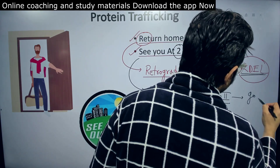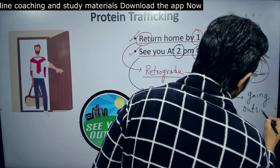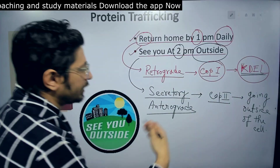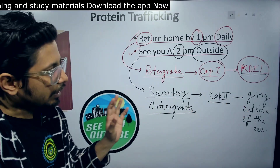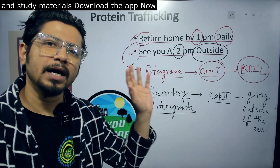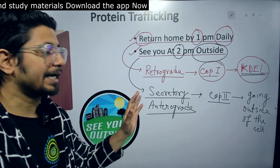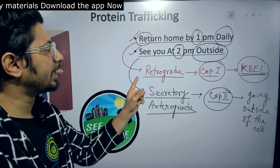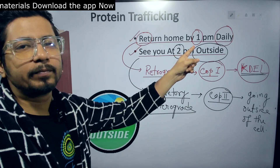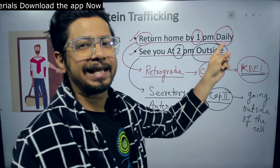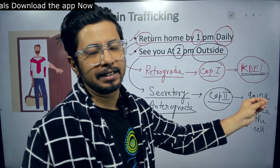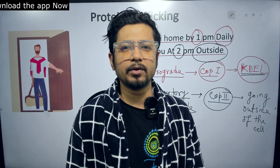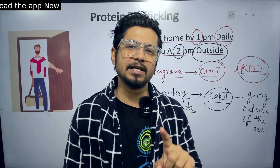'Outside' confirms that proteins are going outside of the cell — from the ER to the Golgi and out of the cell — which is the anterograde pathway involving COP2 vesicles. To summarize: 'Return home' = retrograde pathway; '1 pm' = COP1 vesicle formation; 'Daily/Del' = KDEL signal for retrograde. 'See you' = secretory/anterograde pathway; '2 pm' = COP2 vesicle formation; 'Outside' = proteins exiting the cell.